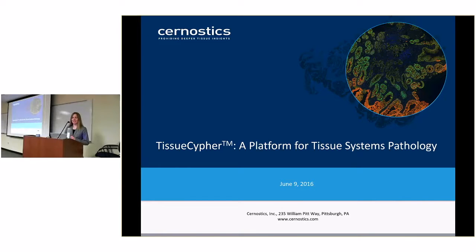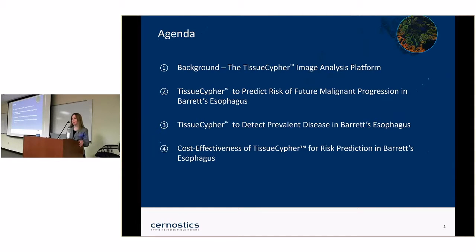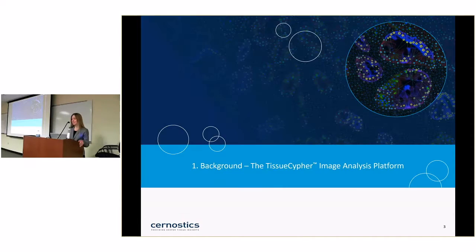Thank you, Chakra, for the introduction and thank you for the opportunity to present here. I'm going to talk about Tissue Cipher, which is a platform for tissue systems pathology. I'll cover some background on the technology and then talk about the two clinical problems in Barrett's esophagus that we're addressing: predicting risk of future malignant progression, and detecting prevalent disease in Barrett's.